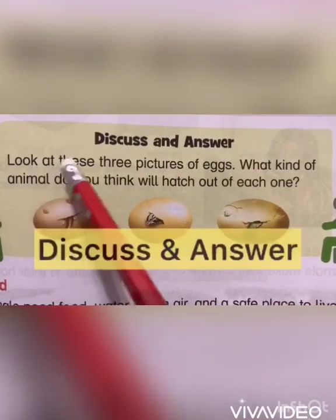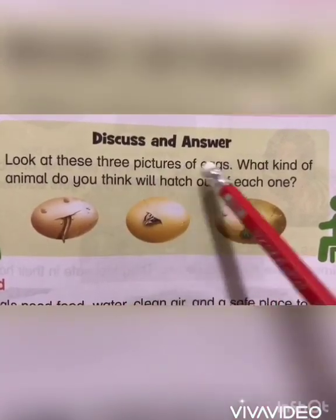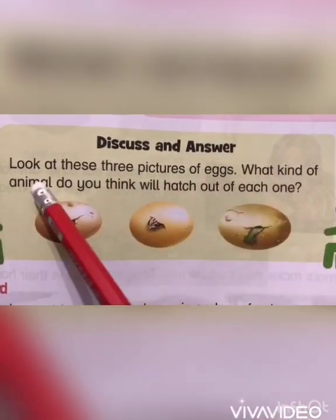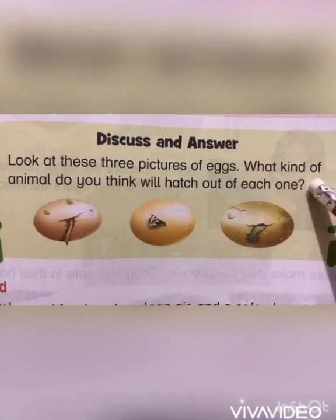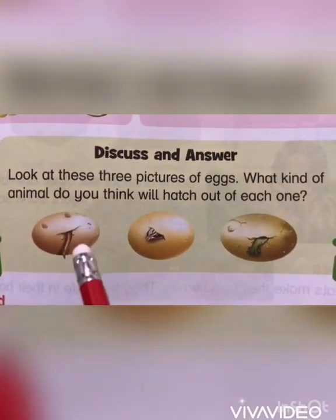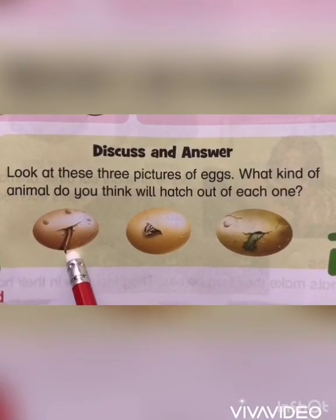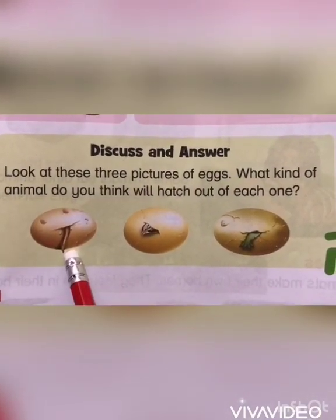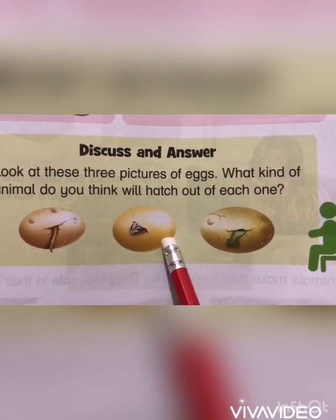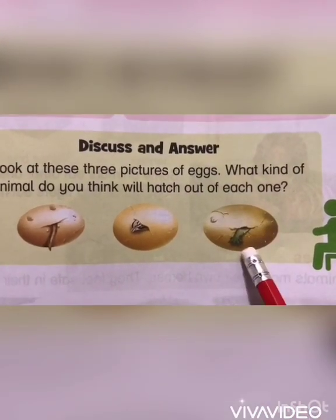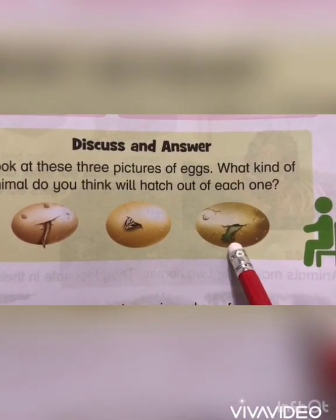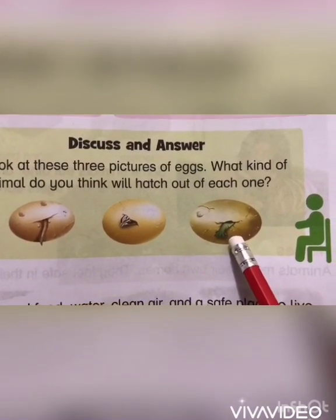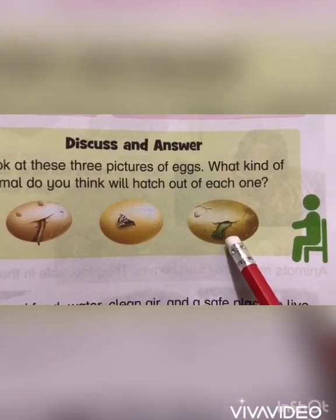Questions and answers: look at these three pictures of eggs — what kind of animal do you think will hatch out of each one? From the first picture, a baby lizard will come out. From the second picture, a bird will come out. From the third picture, a baby alligator or crocodile can come out.